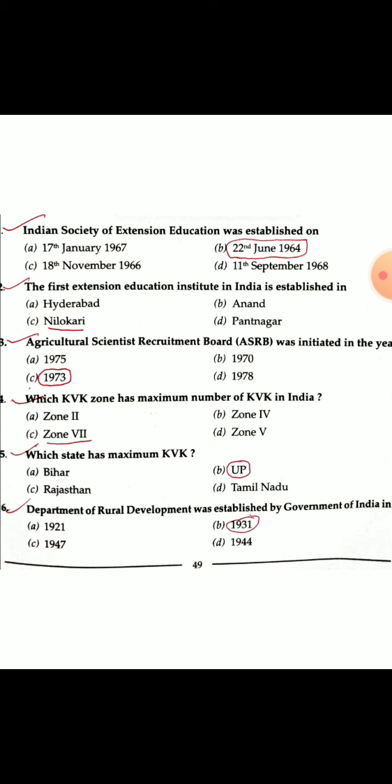Which zone has the maximum number of KVKs in India? Zone 2 has the maximum number of KVKs. Agricultural Technology Application Research Institute (ATARI) manages the zones. Fifth question: Which state has the maximum number of KVKs? Uttar Pradesh (U.P.) has the maximum number of KVKs currently.